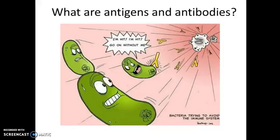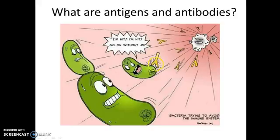Let's talk about what antigens and antibodies are. The immune system has a group of cells called B cells, and one of the major things they do is produce proteins called antibodies — these little Y-shaped structures. The purpose of antibodies is to attach to something seen as foreign, for example a bacterium. On the surface of that bacterium there will be little markers called antigens. Antigens bind with antibodies, and together that binding targets the foreign cell for removal by the phagocytes of the immune system.